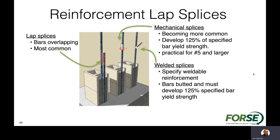Different splice options are available: lap splices, weld splices (not common in masonry or concrete), and mechanical splices. Mechanical splices — particularly threaded couplers — are used quite a bit in concrete design and should be used more in masonry, especially for larger bar sizes in confined areas. Some contractors actually prefer threaded couplers only to develop their bars, making construction easier. Engineers don't have to specify them, but should be open to contractor requests for this approach.